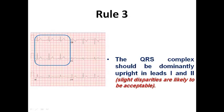Rule number three looks at lead one and lead two, and dictates that the QRS complex in lead one and lead two should be predominantly upright or predominantly positive. Some slight disparities may be acceptable, but in most normal ECGs lead one and lead two should be predominantly positive. You can find a small S-wave or an initial Q in lead one — the key is the predominant polarity.